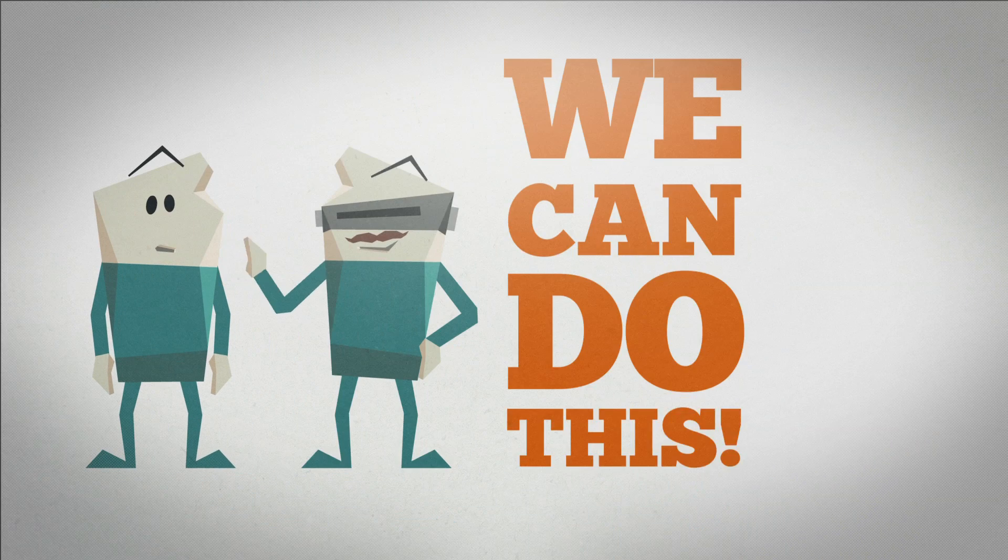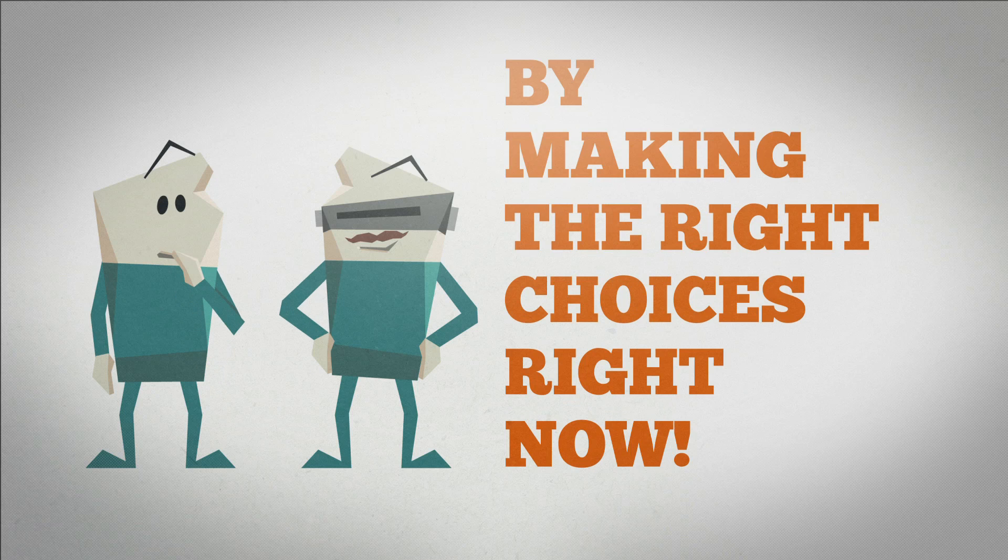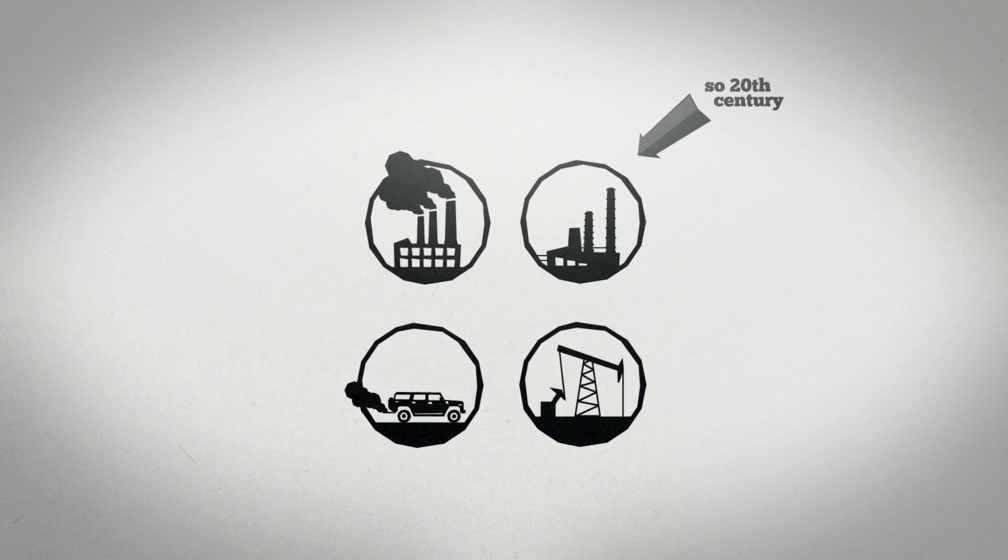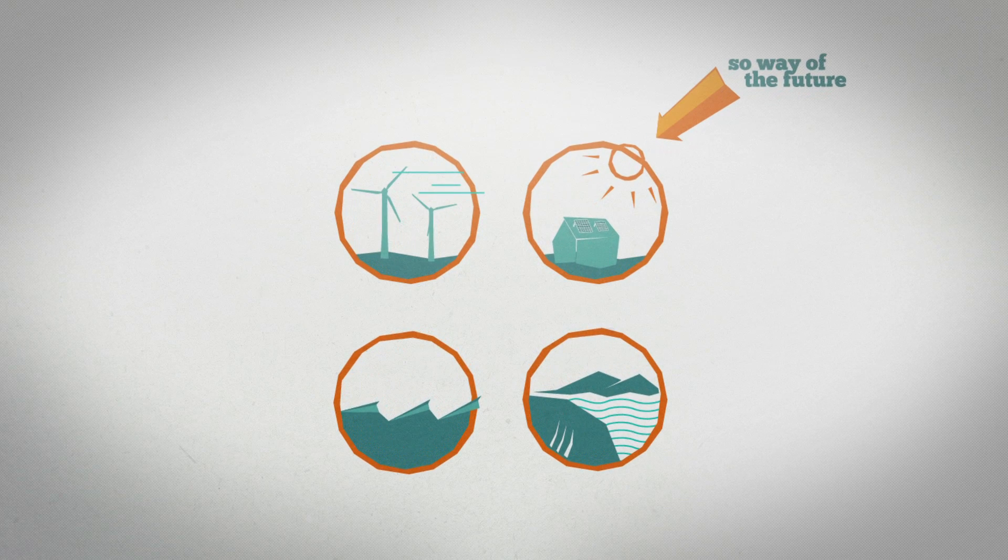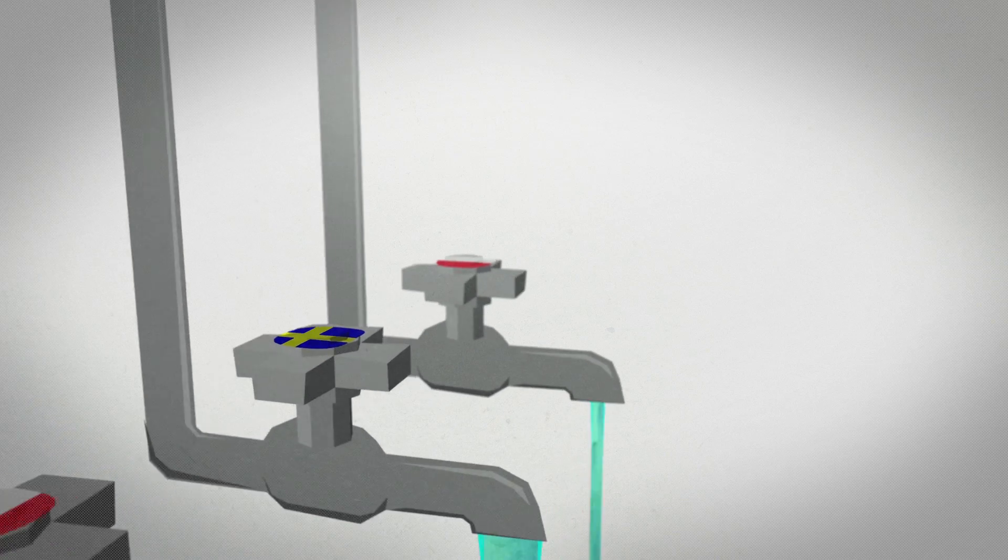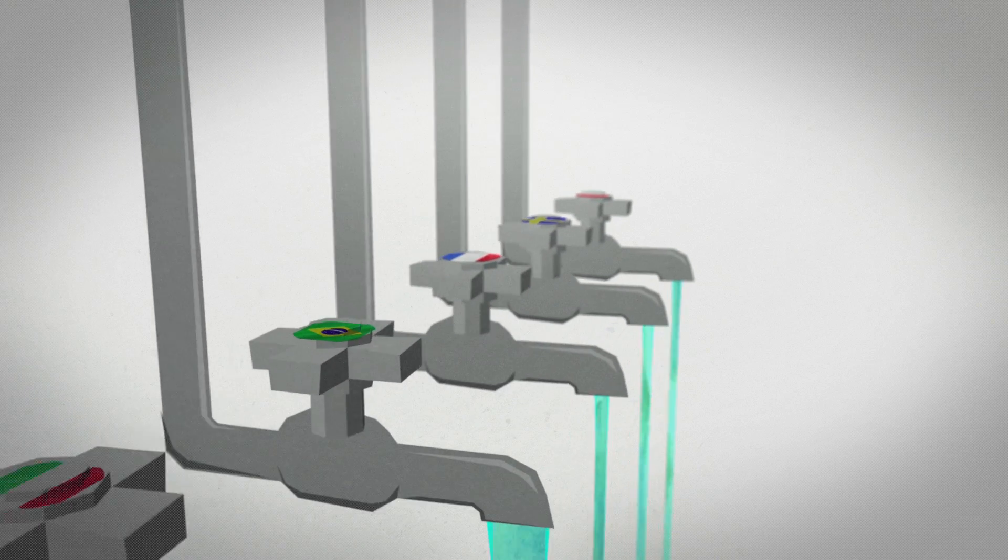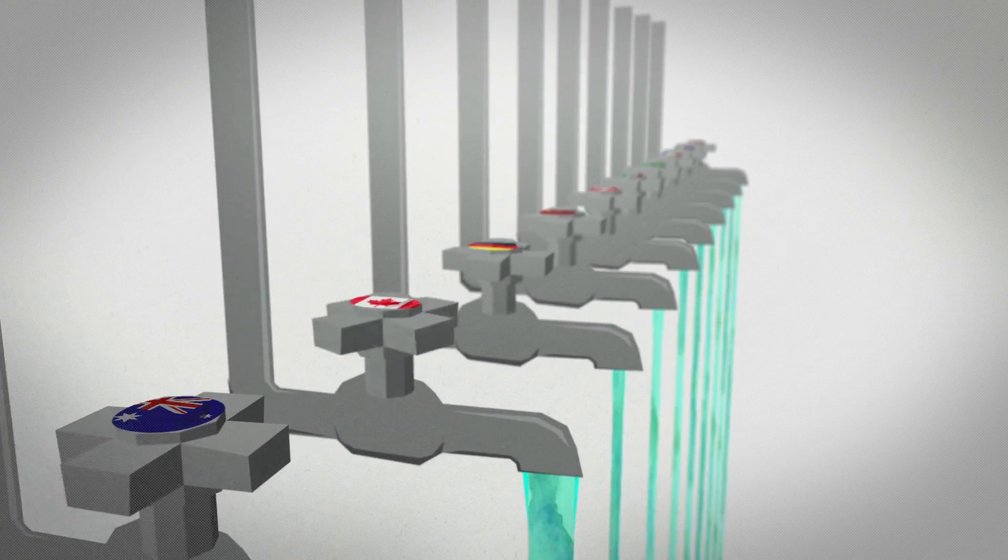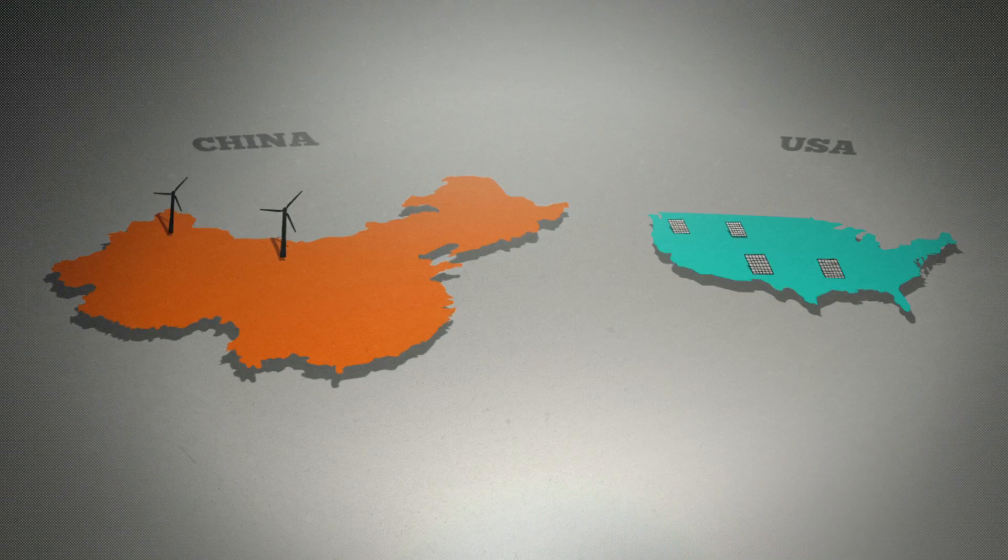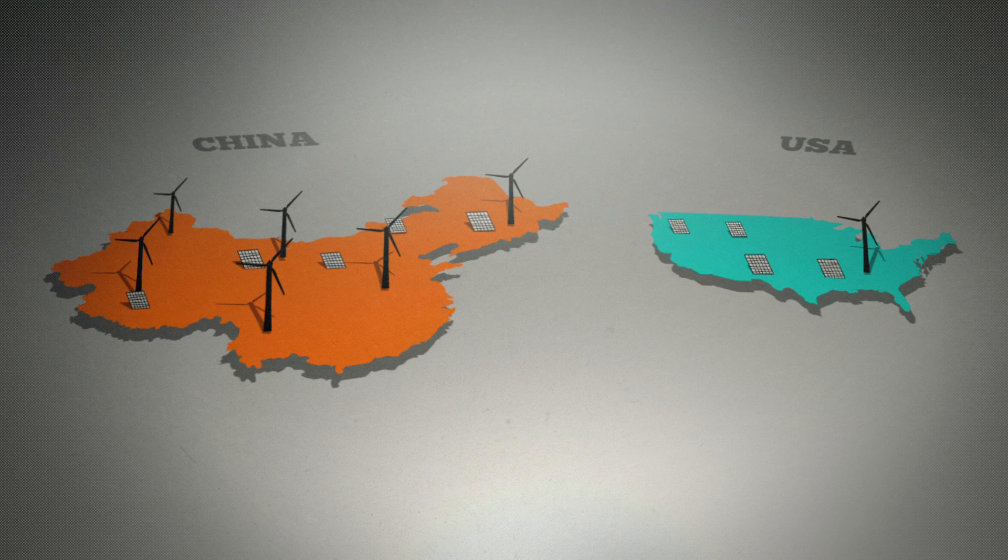We can do this by making the right choices right now. The big thing is getting off fossil fuels, replacing coal and gas power plants with renewable energy. Countries everywhere are starting to make CO2 emitters pay for the CO2 they produce, motivating them to reduce emissions. Global investment in renewable energy is growing, but we need to ramp it up fast.